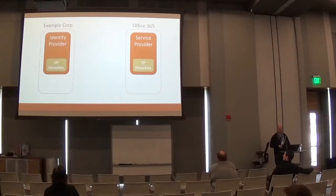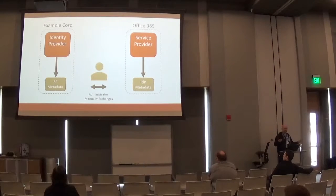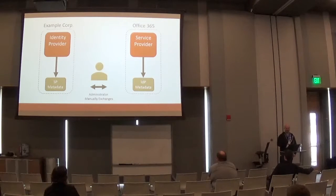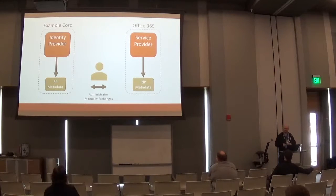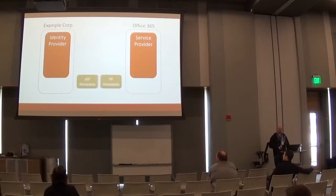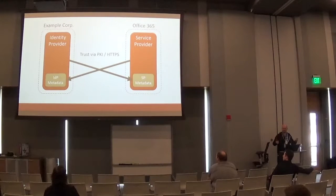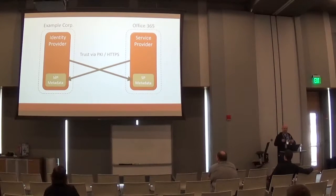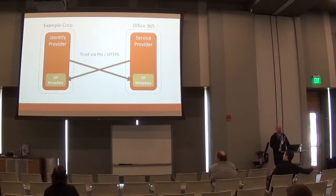These metadata get exchanged in different ways. One way is that an administrator manually exchanges this — Office 365 gives you their information in a file, you go to administrative tooling in your identity provider and import that information, either by picking out bits by hand or giving it the file directly. Most times these are XML; in the case of OpenID Connect, it's JSON. Another way is through PKI, where you bootstrap your trust relationship via HTTPS URLs and use the Internet's PKI system to trust one another's endpoints — the service provider just reaches out to the identity provider to fetch its metadata and vice versa.